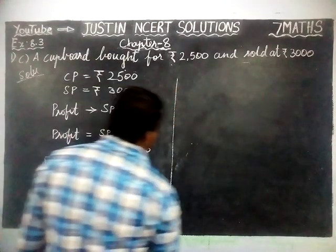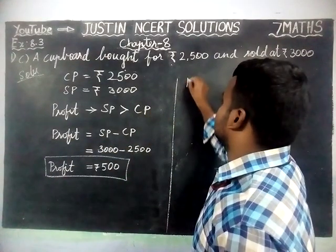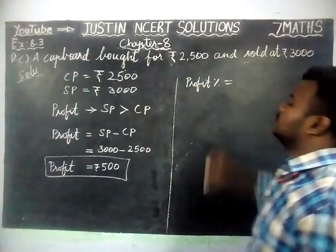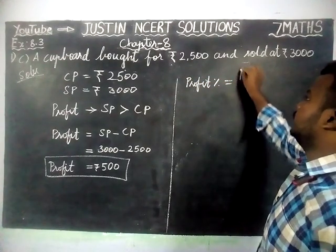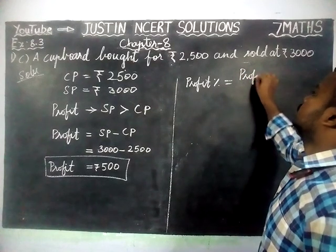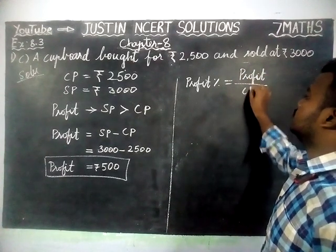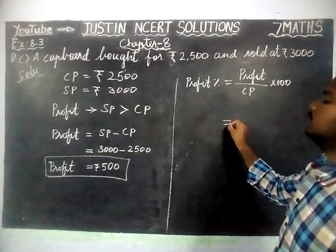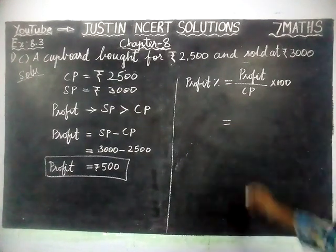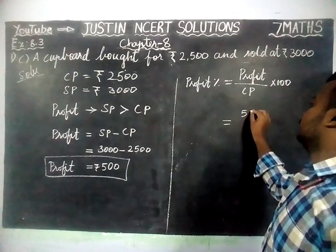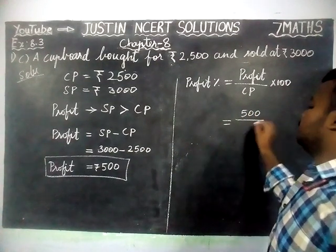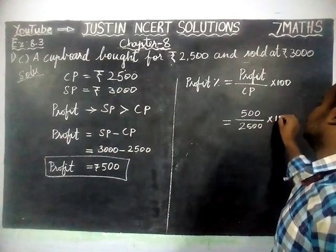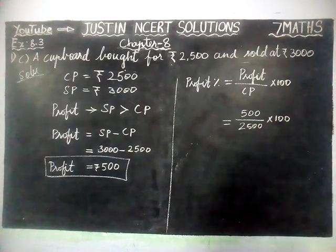Now, we are going to find profit percentage. Profit percentage is equal to profit divided by cost price, into 100. Here, profit amount is equal to 500, divided by cost price 2500, into 100.